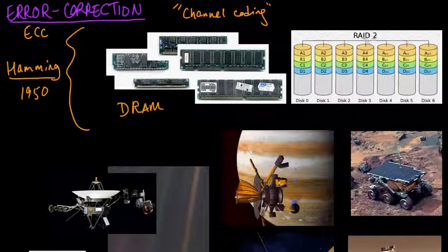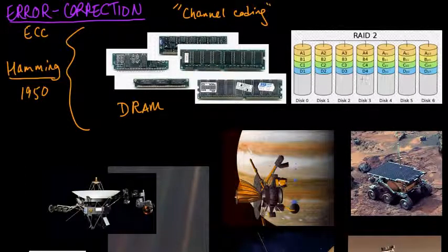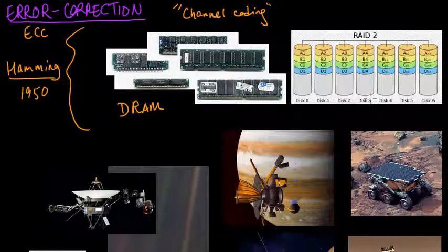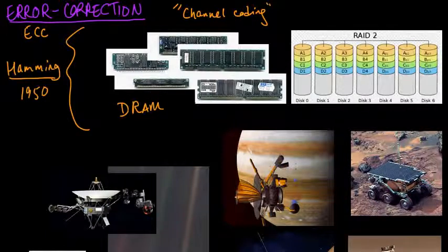RAID 2 uses Hamming codes. Here you have seven hard disks, and the data is stored across these disks with some redundancy so that if any one disk completely failed, you could still recover all your data without any errors. That's the feature of the 7-4 Hamming code — you can lose any one bit out of seven and still recover your data. These are some applications of Hamming codes still in use today.